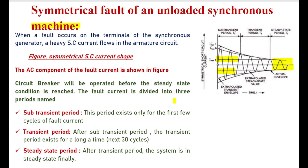The fault current is divided into three periods. The first is the sub-transient period, which exists for only a few cycles of fault current. Next is the transient period, which exists for a longer time after the sub-transient period. Finally, the steady state period is reached after the transient period, where the AC maximum equals the DC component.